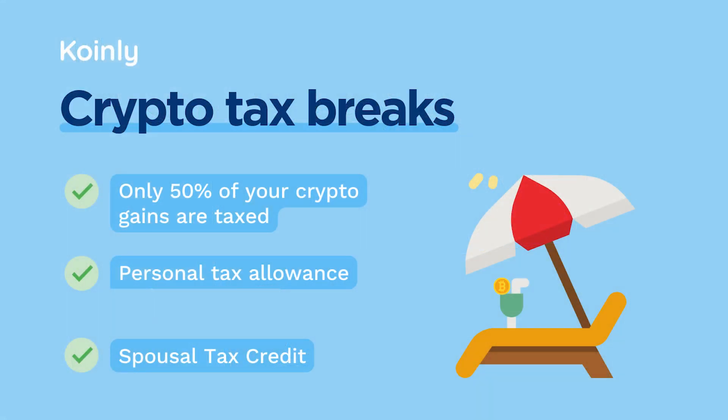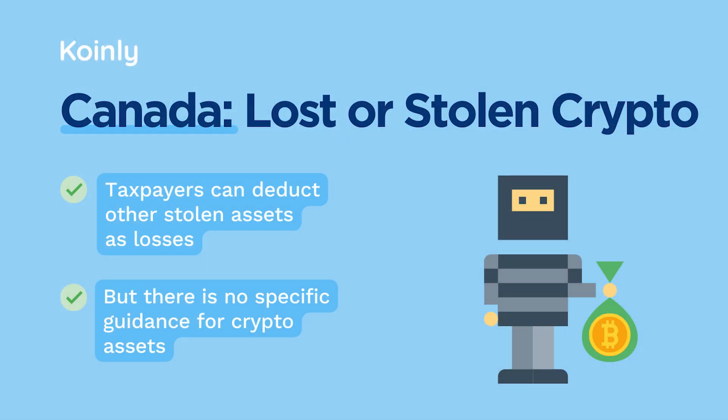On some good news, there are some breaks you can take advantage of: only half of your capital gains are taxed under $250,000; each taxpayer receives a basic personal amount of income that's tax-free; and if you have unused basic personal income from your spouse, you can transfer this for a longer tax break. As for lost or stolen crypto, the CRA hasn't given clear rules on this, but since crypto is treated as capital property, you might be able to claim it as a capital loss — though you can likely only claim the amount you originally paid, not the value when it was lost.